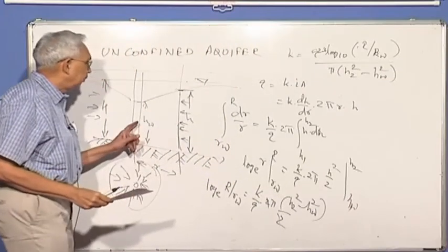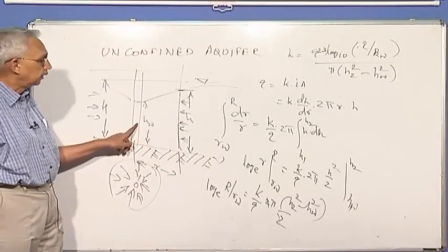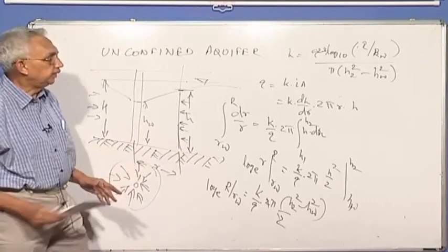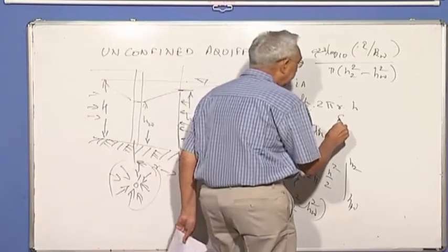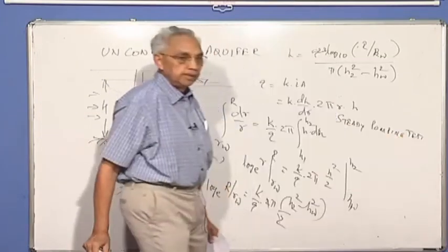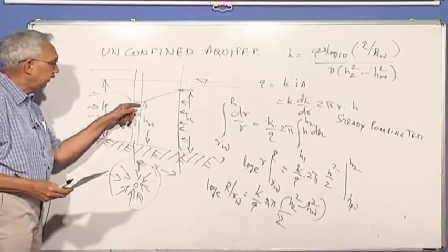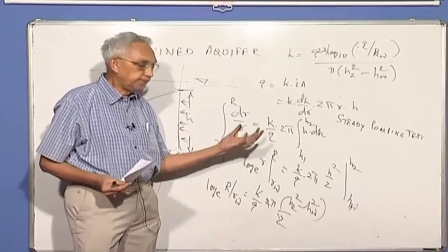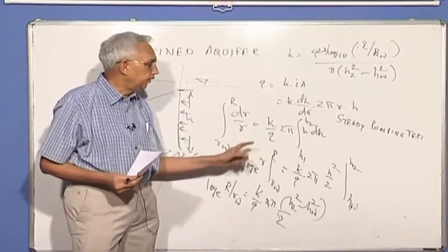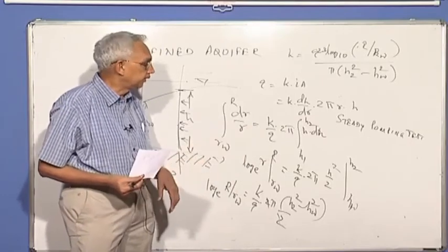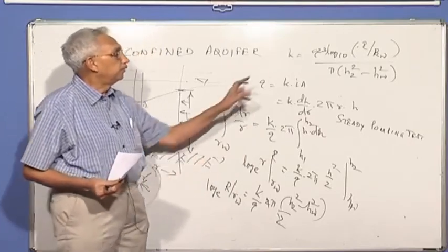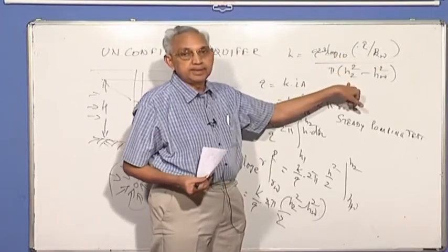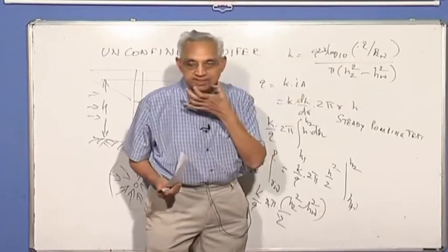All you have to do is measure the water level in the well and at any distance R you measure the water level H2. This is called what you can call steady pumping test. And the water level remains constant in the well, so that is the Q value. For that, what is, it has to be constant for steady pumping, and you know the Q from the pump rating or measuring outside, you can do that. And you know the distance at which you are measuring the head, and the head at that point is H2, and the head in the well is HW.